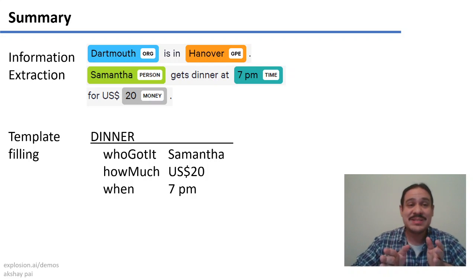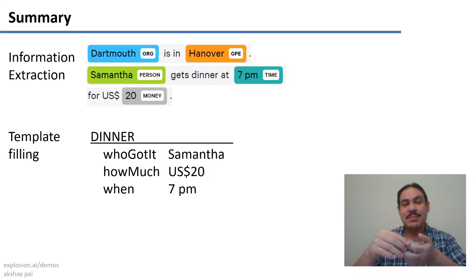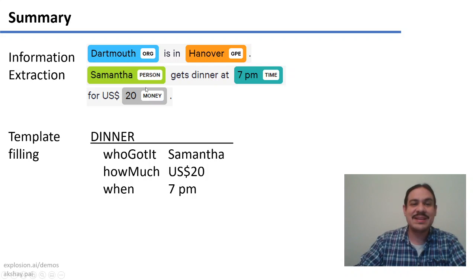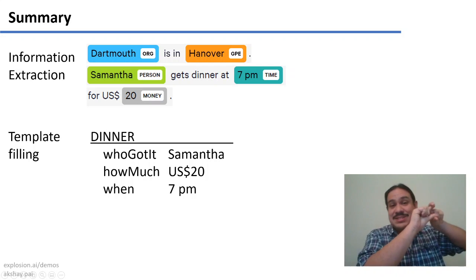Okay, so to summarize this presentation, we've been looking at information extraction. For example, relationship extraction and template filling. So if you have a phrase like, Samantha gets dinner at 7pm for $20, we do named entity recognition to get, for example, that this is about money, this is about time, and this is about a person. And then, for example, if we have a template that's about dinner, we can have attributes like who got it,